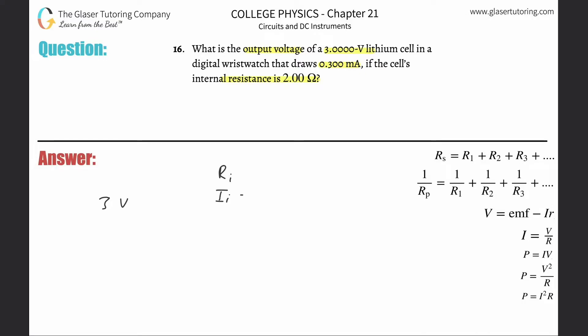We can call it the internal current. The internal current is going to be 0.3 milliamps, but we need that in amps, so just multiply that by 10 to the minus 3. Now that'll be in amps. Also, I forgot to write this down - this is 2 ohms.